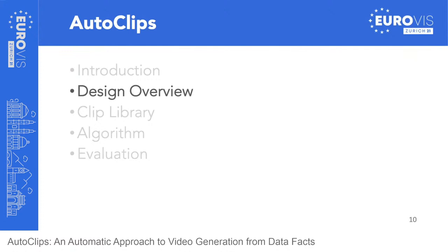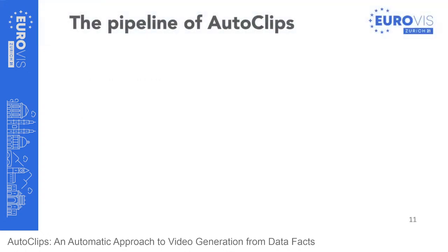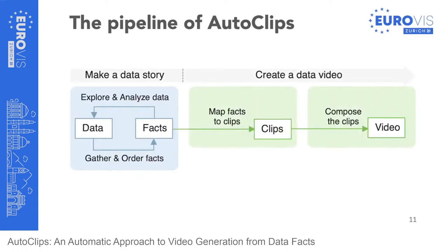To resolve these two challenges, we present the design overview of our proposed system, AutoClips. According to real-world practice, we found that creating a data video comprises three main phases: first, the user collects a series of data facts and constructs a storyline; then, chooses data visualizations and decides how to animate them; finally, edits and combines the animated visualizations into a coherent data video. AutoClips focuses on reducing human effort in selecting animated visualizations and assembling individual clips.